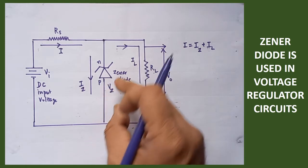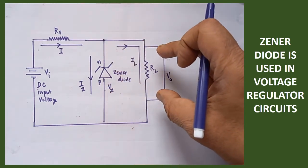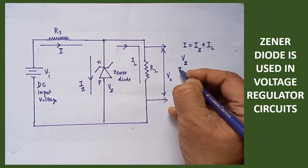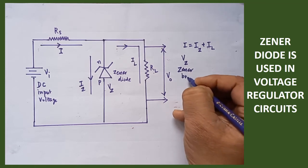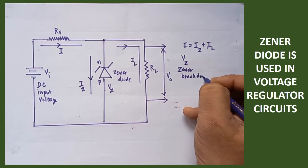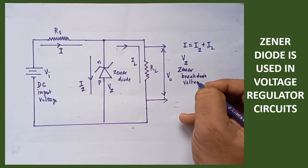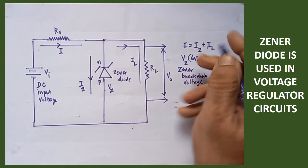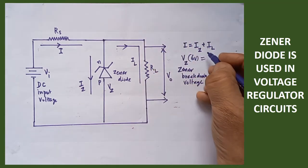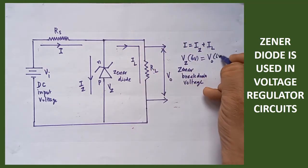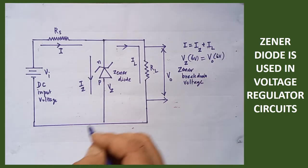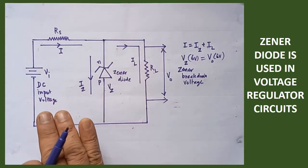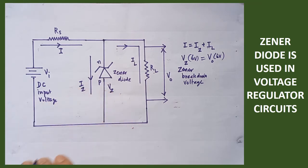You have to understand one more thing: the Zener breakdown voltage will be equal to the output voltage. VZ is called the Zener breakdown voltage. For example, if the Zener breakdown voltage is 6 volts, the output obtained across RL will also be 6 volts. If it is 9 volts, this one will also be equal to 9 volts. Whatever the input voltage, you will get a constant output voltage. That is why the entire circuit acts as a voltage regulator circuit.